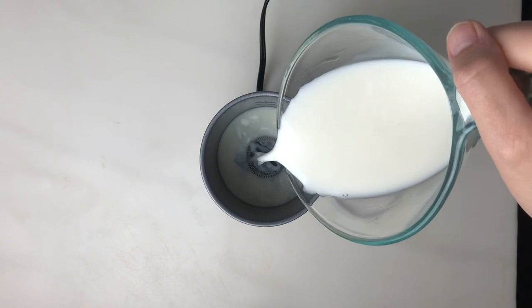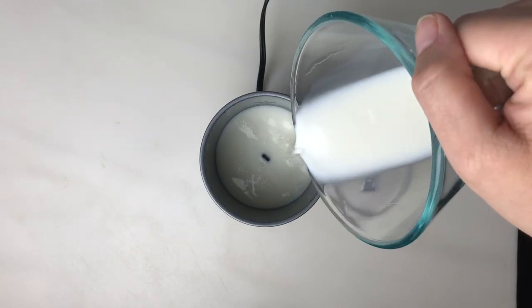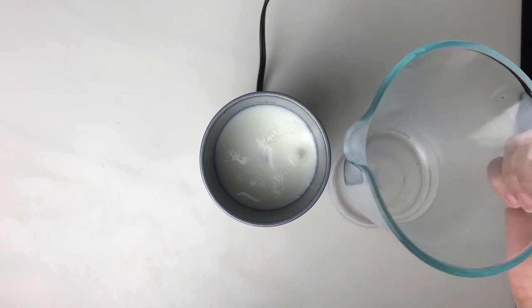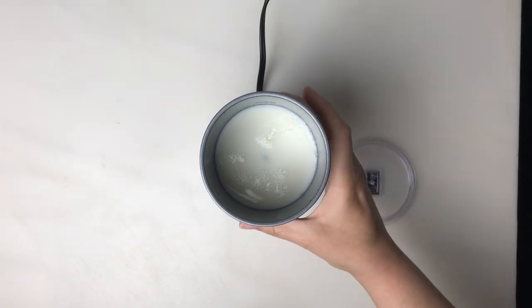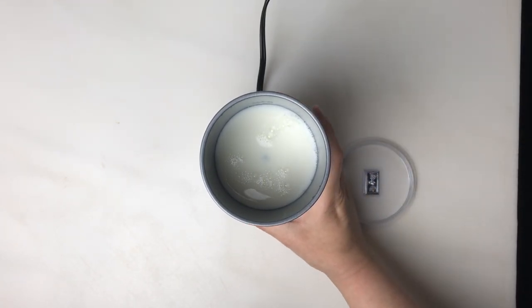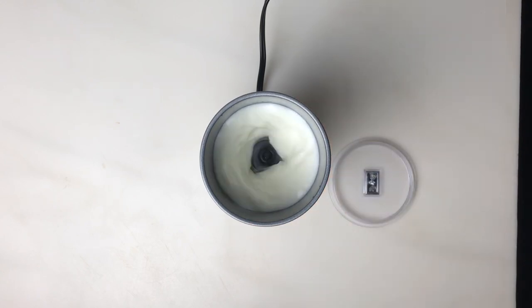Pour in the desired amount of milk, and then place the lid on the unit, or don't. Turn it on, and the machine does the rest.